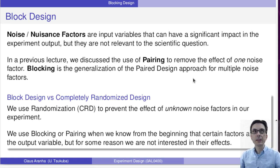In the previous lecture we discussed the use of pairing to remove the effect of one noise factor. Blocking is a generalization of the paired design approach for multiple noise factors. We use randomization (CRD) to prevent the effect of unknown noise factors in our experiment. On the other hand, we use blocking or pairing when we know from the beginning that certain factors affect the output variable but for some reason we are not interested in their effects.